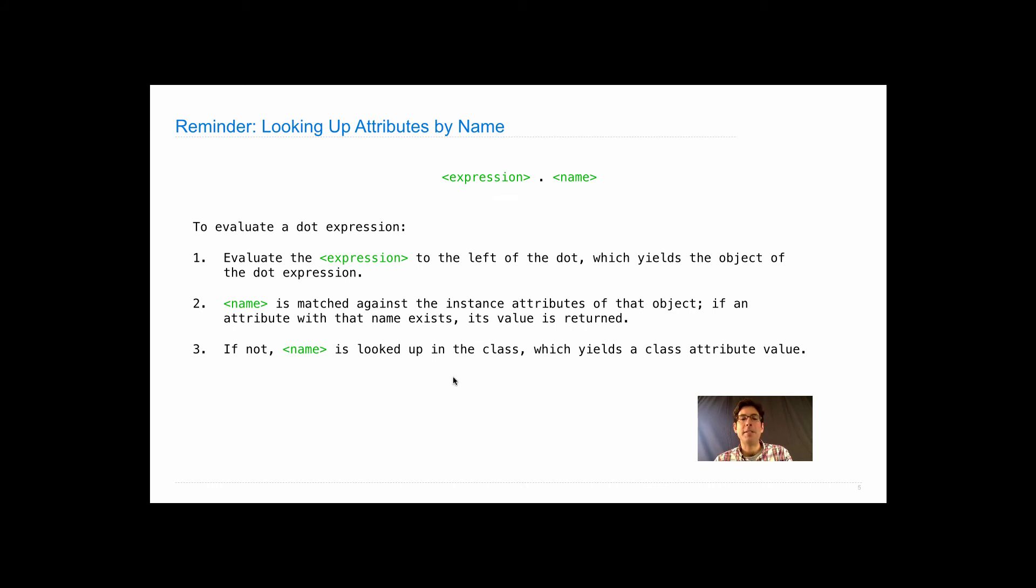If not, then name is looked up in the class, which yields a class attribute value. That value is returned unless it's a function, in which case you get a slightly different version of the function. You get a bound method where you get the function with its first parameter bound already to the object of the dot expression.